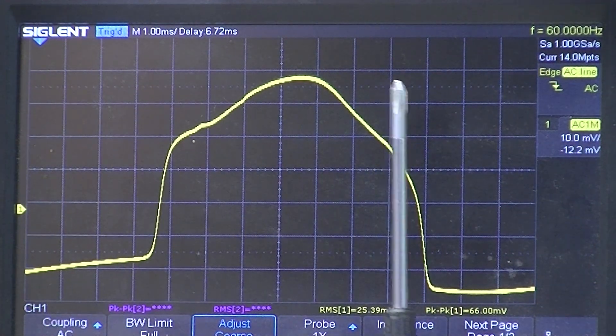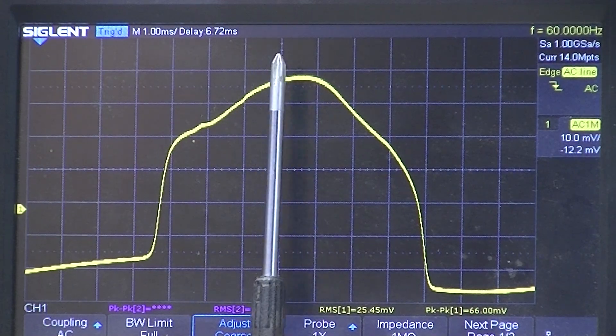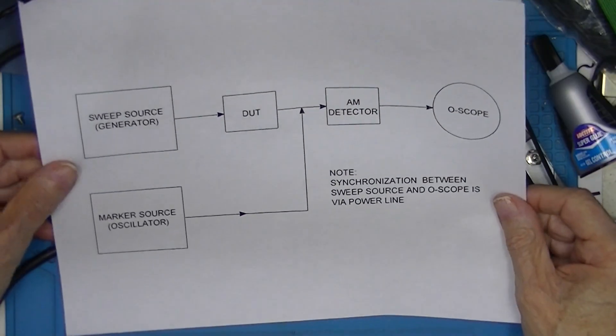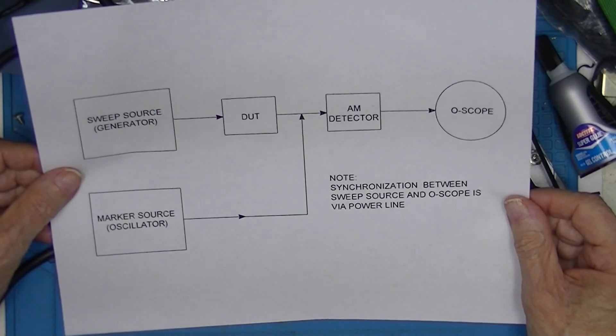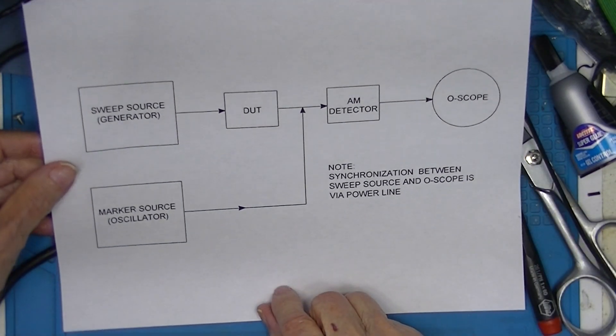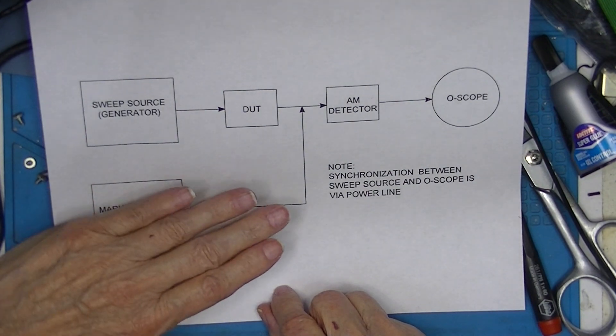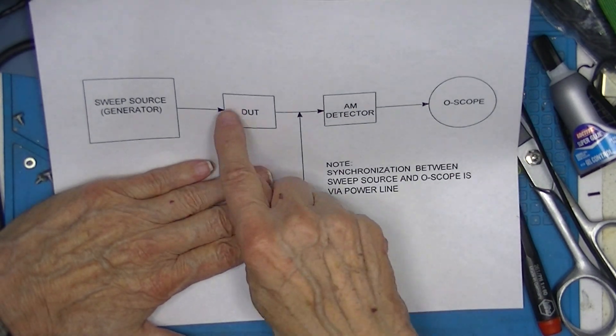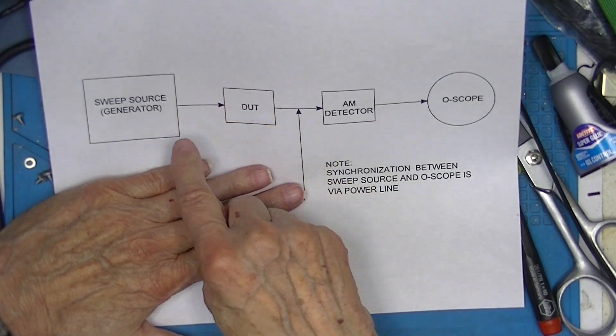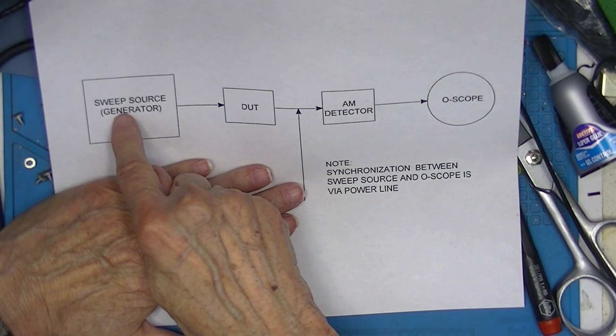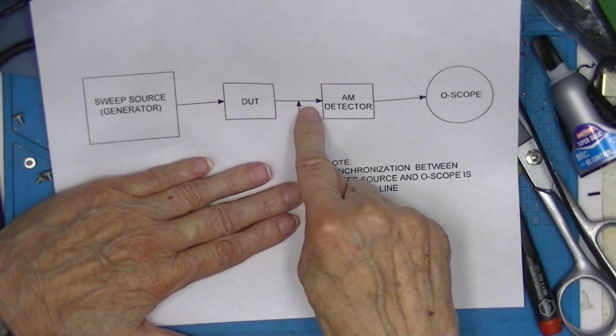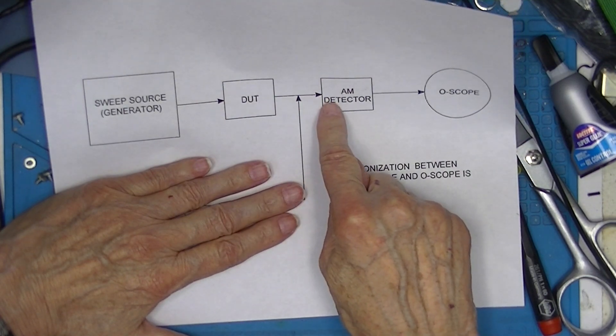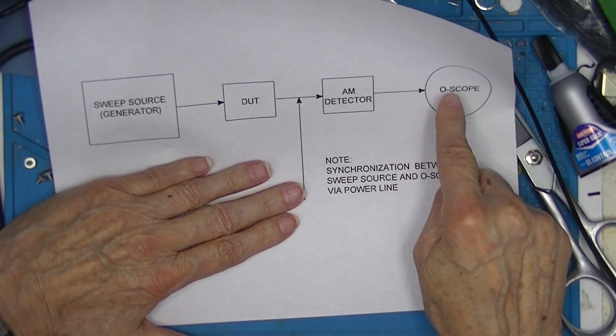Supposedly this is centered at 10.7 megahertz. In order to completely describe what we need to do here, I've drawn this little drawing. Right now we don't have this and we don't have a device under test. Right now the sweep generator, where the sweep source is going into the AM detector and the output from the detector is going to the oscilloscope.